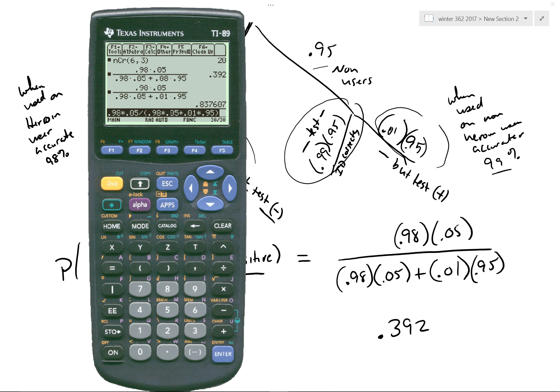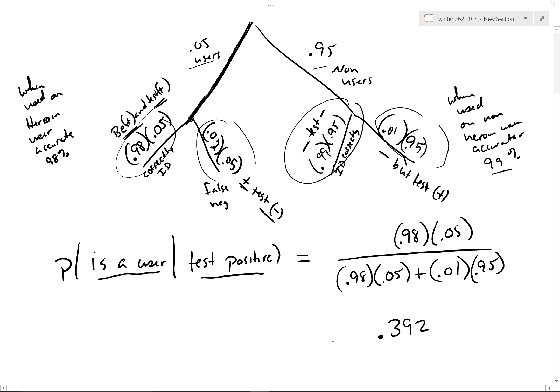that bumps us up to 83.7% of the people who test positive are positive. Now how can I even get even better yet? I could get even better yet, of course, if these guys were even more accurate, obviously.